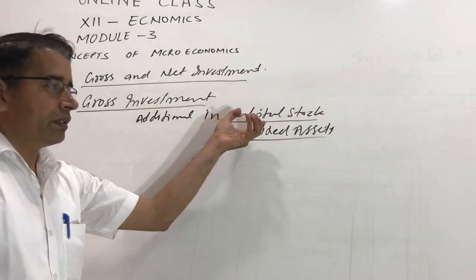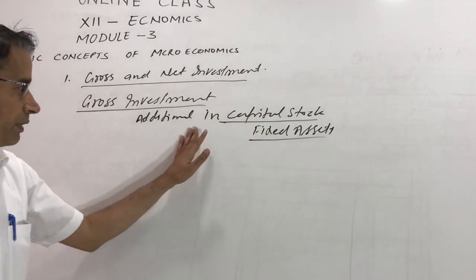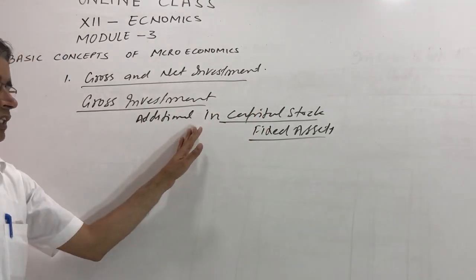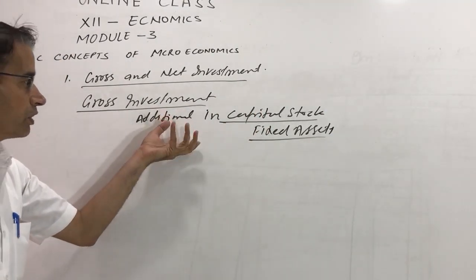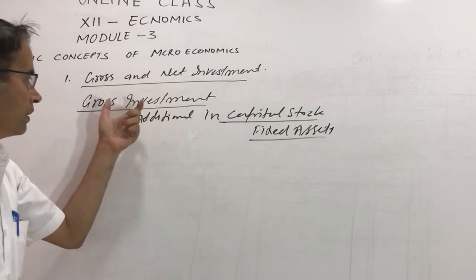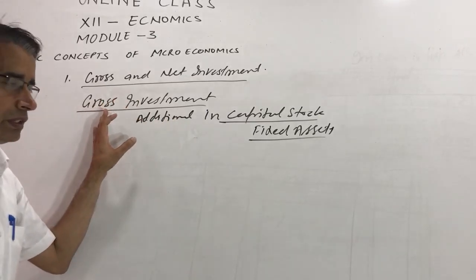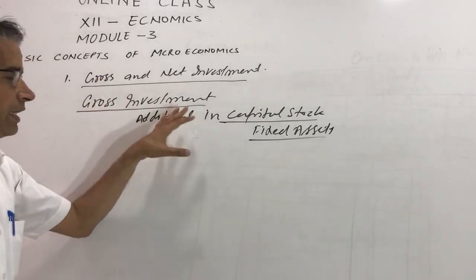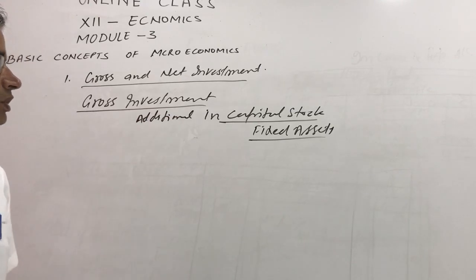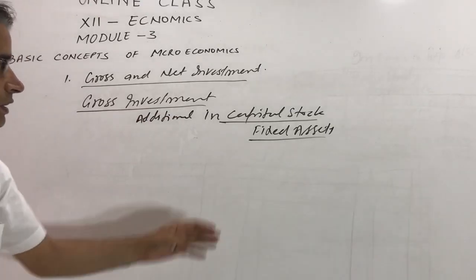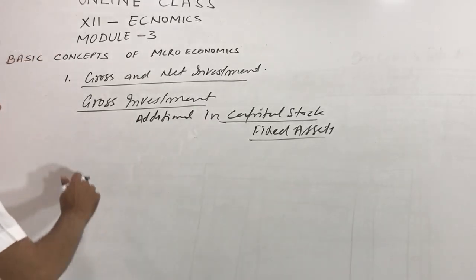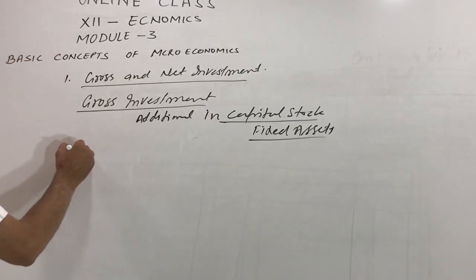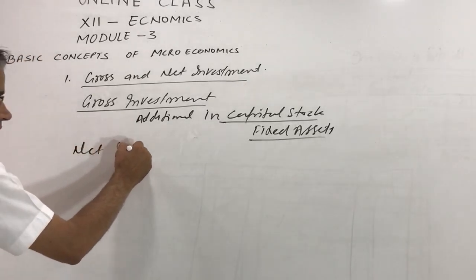When that capital stock is increased by a specific or actual amount, that is called gross investment. Gross investment also includes the depreciation of such assets which may occur due to their regular use. The second concept is net investment.